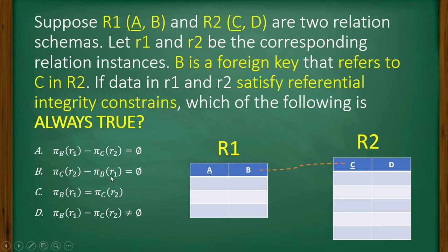Now if I look at the next option, select C from r2 minus select B from r1 equal to empty set. No, it may not be true because if both of them are having equal number of rows in r1 and r2, then only it will be true. But if they are not equal, then it is not going to be true. Like here, in r1 there are 3 rows, in r2 there are 5 rows, so here it is not true.